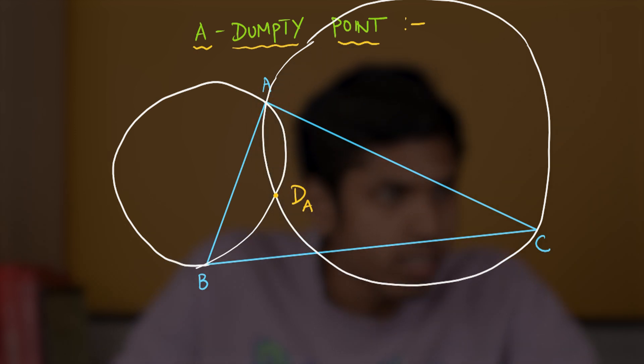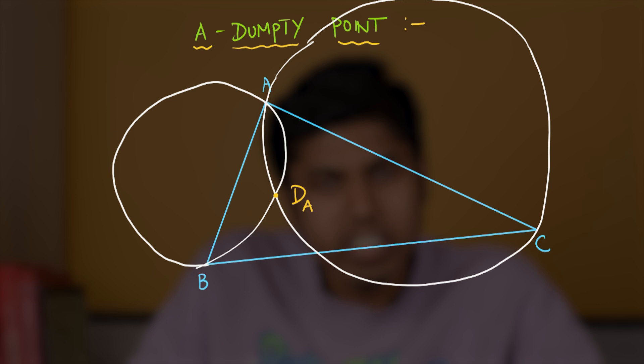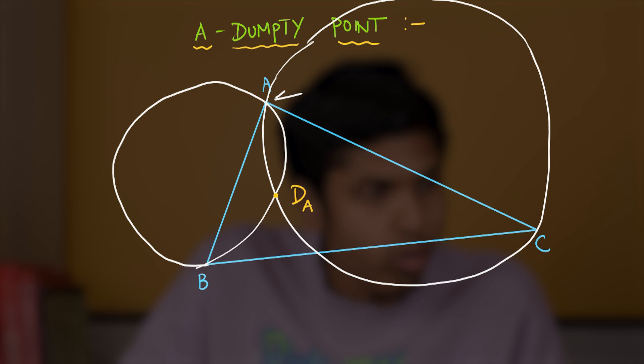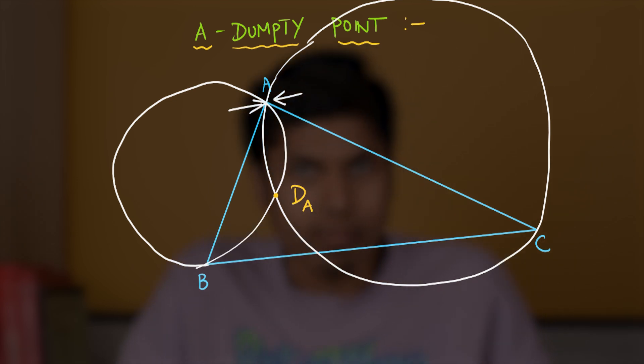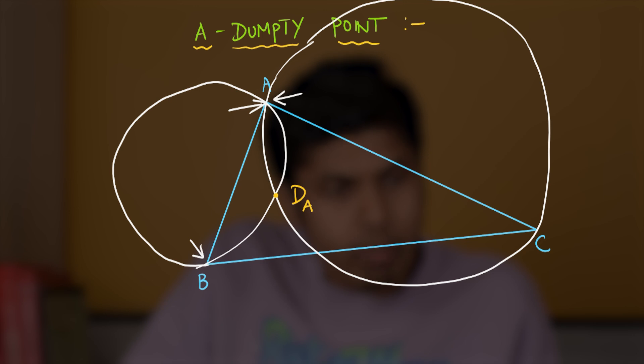So, you could see that the definition is related to A Dumpty Point, but it is not exactly related. The reason is that points of tangency are now focused on A rather than the Humpty Point definition in which the points of tangency were at D and C. So, this is what we call the A Dumpty Point.